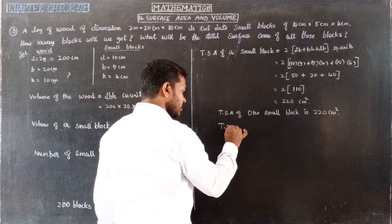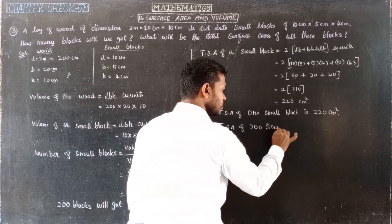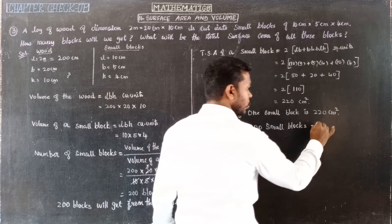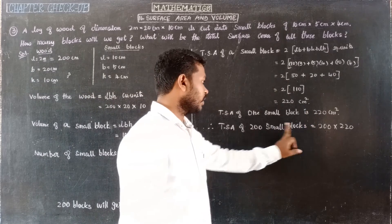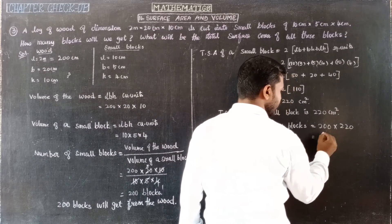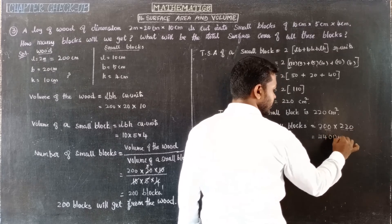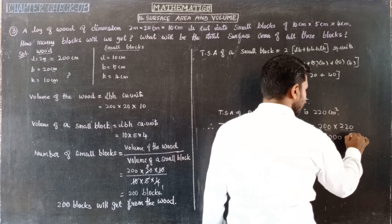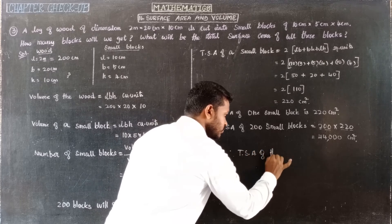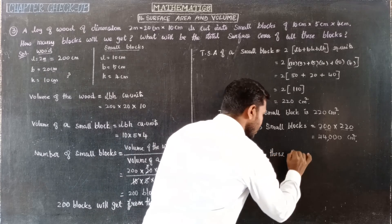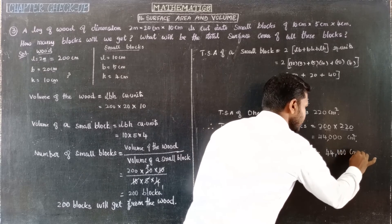Total surface area of 200 small blocks = 200 × 220 = 44,000 centimeters squared. Therefore, the total surface area of all the small blocks is 44,000 centimeters squared.